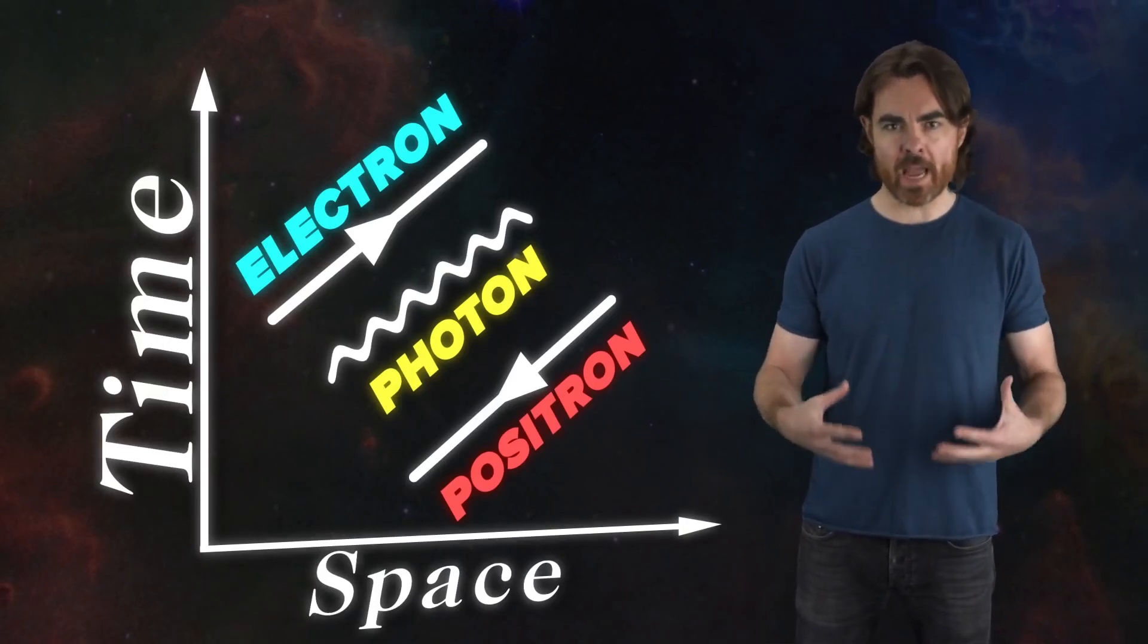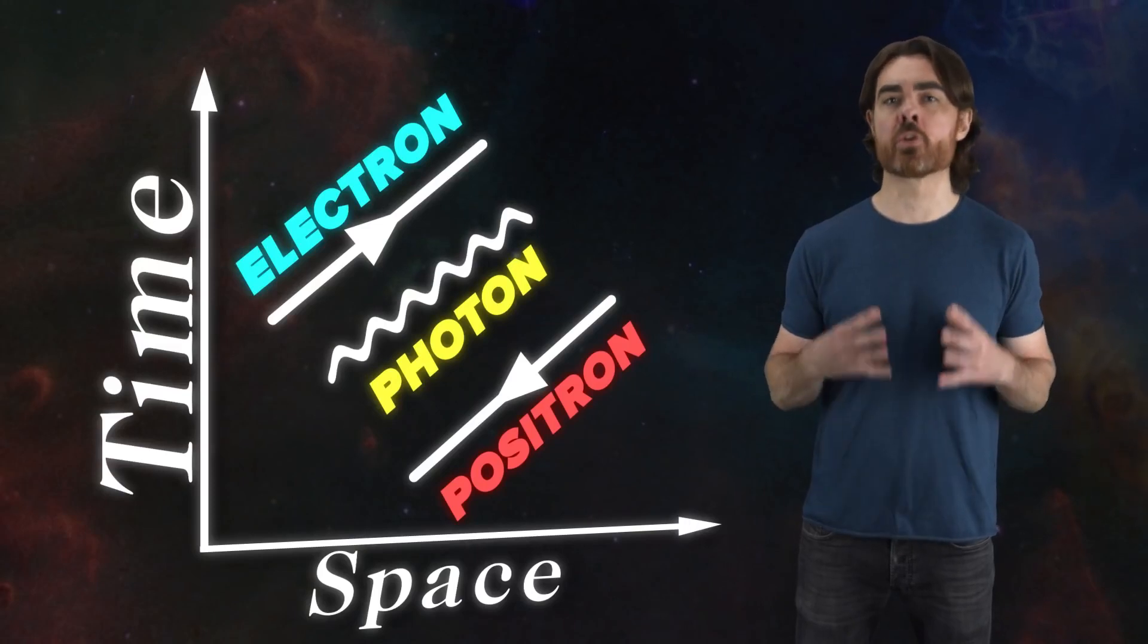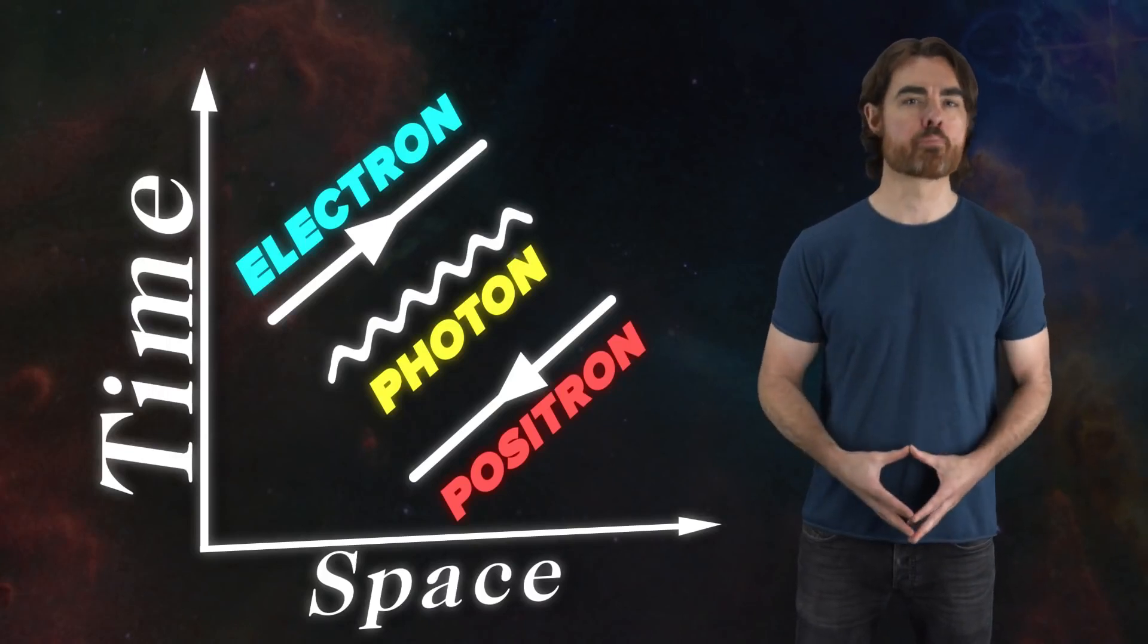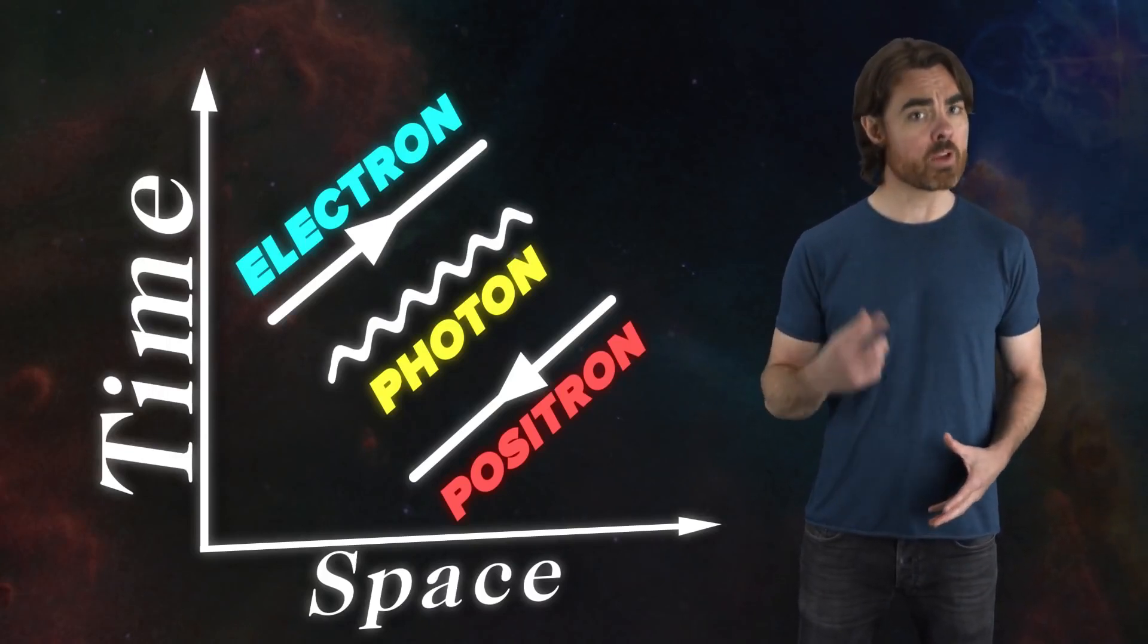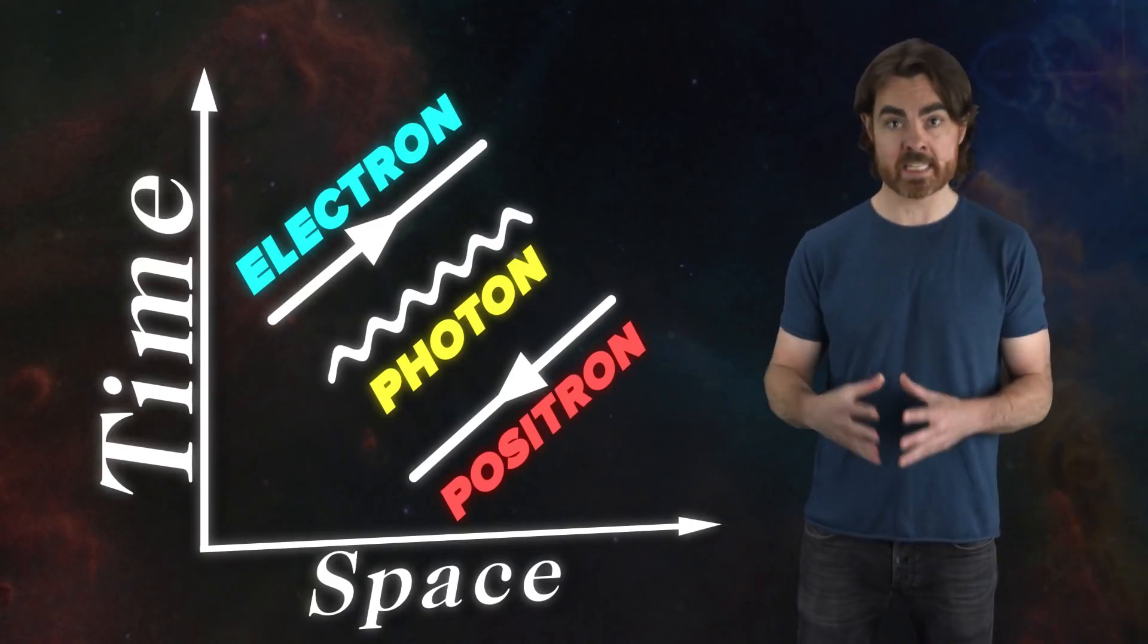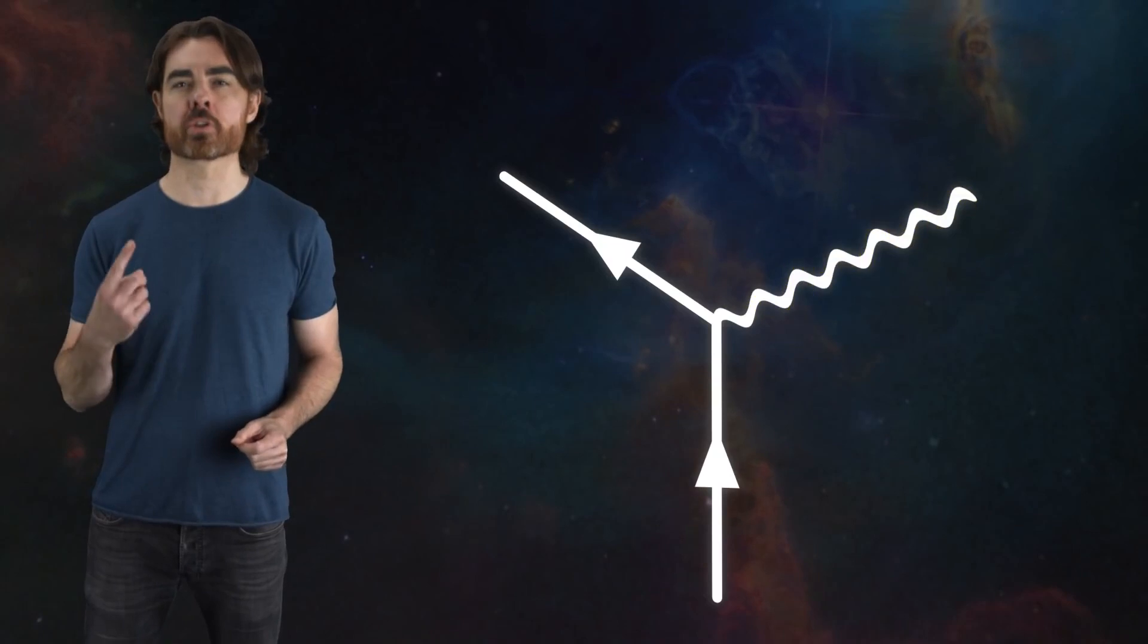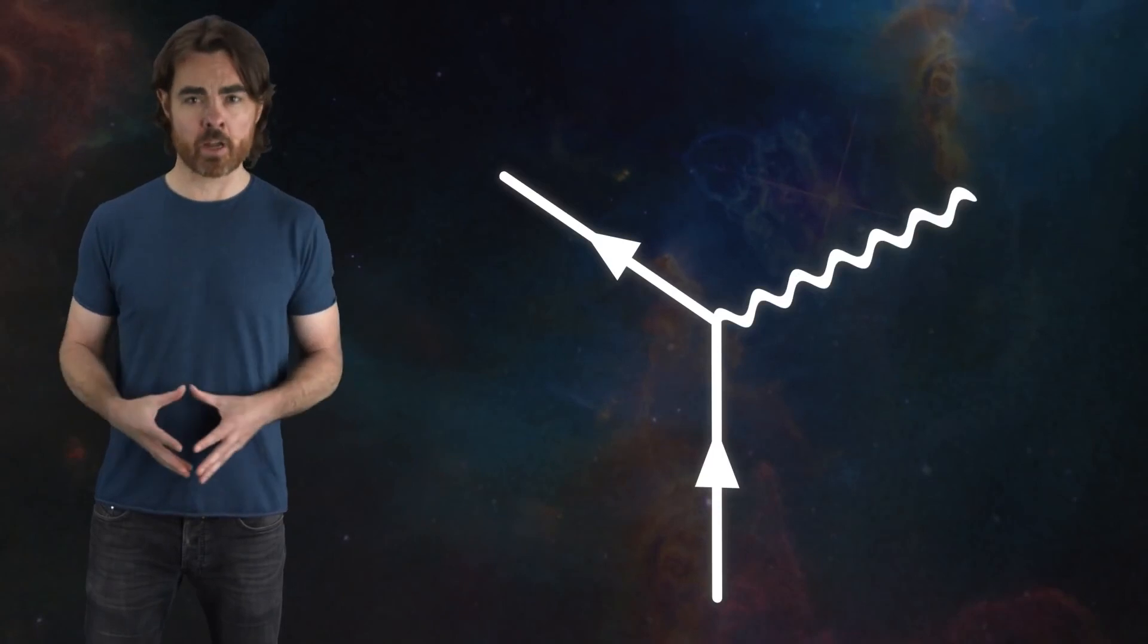Particle-slash-field interactions are represented as a vertex, a point where the lines representing the different particles come together. It turns out that there's only one vertex that's possible in QED, one with an arrow pointing in, an arrow pointing out, and a single photon connection. It looks like this. This vertex alone represents six very different seeming interactions, and it can be used to construct infinite Feynman diagrams. Let's look at the possibilities.